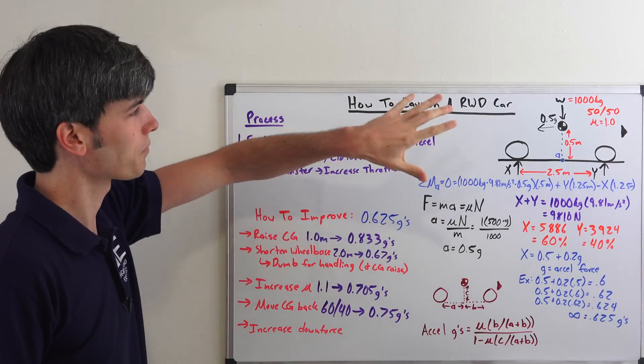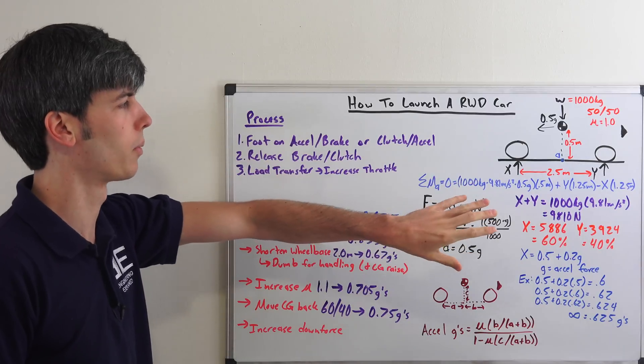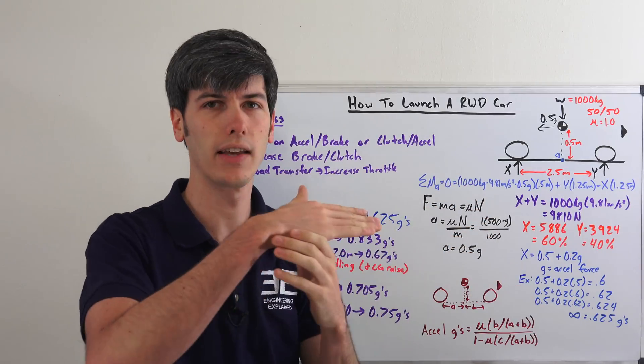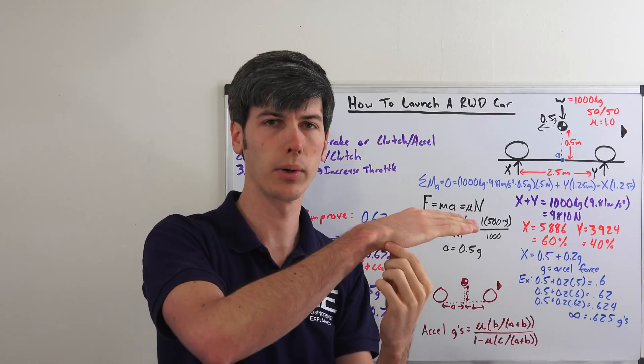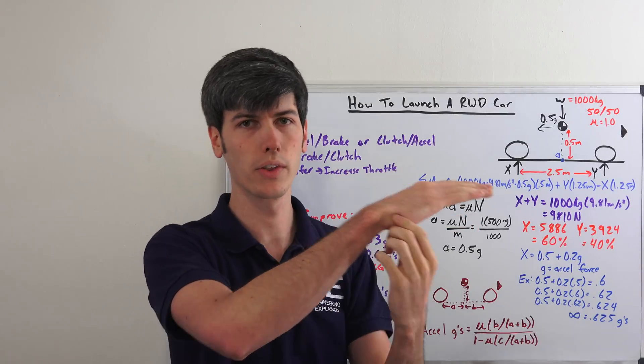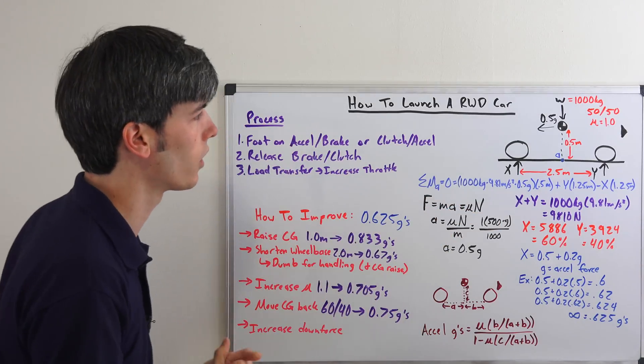But we're going to talk about here, how do you find the maximum? Where is that point that it balances out? So as you're accelerating, you have load transfer, you can then accelerate faster. You have more load transfer, you then can accelerate faster. Where does it all balance out?